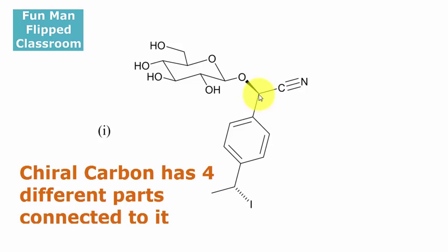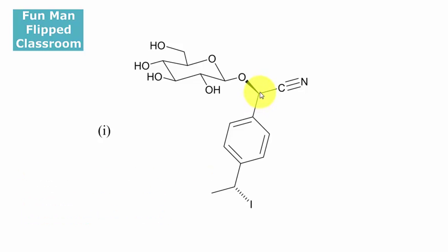If I have a junction here, it means that this carbon connects to a hydrogen that's invisible, the oxygen, a carbon that connects to a triple bond nitrogen, and a carbon that belongs to a benzene ring. So benzene, CN, oxygen, and the hidden hydrogen that's not shown—they're all different, and hence this is a chiral center.